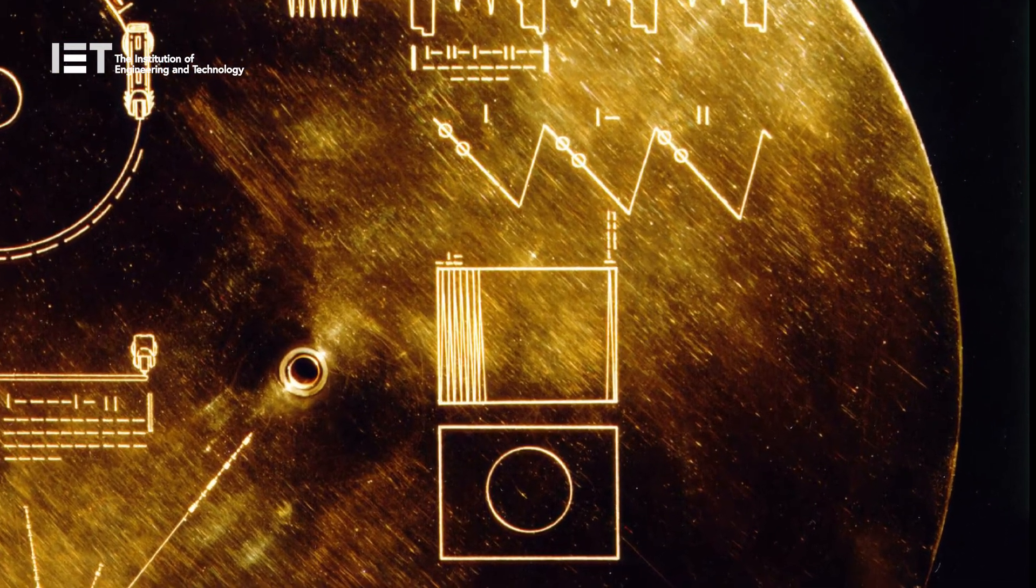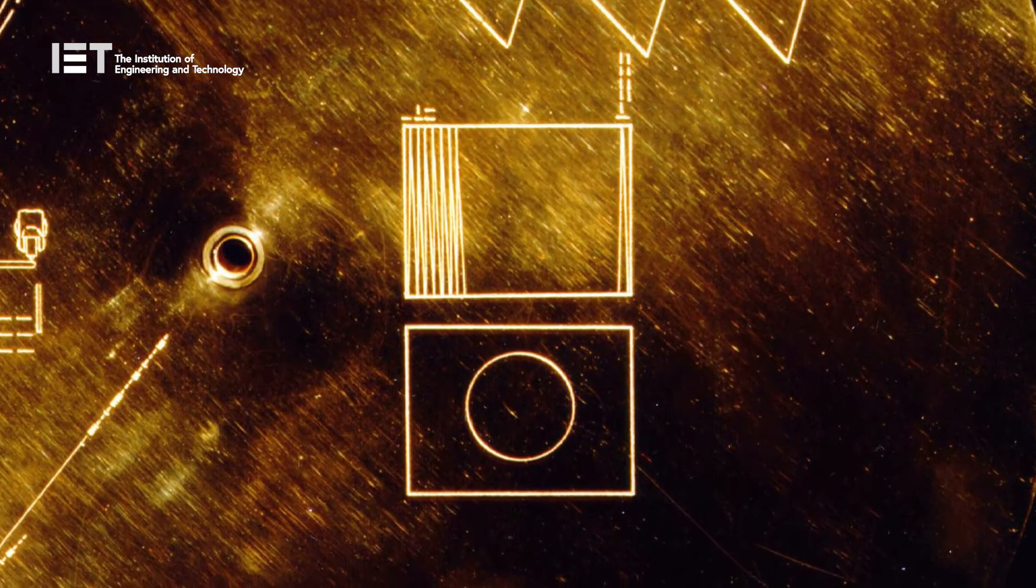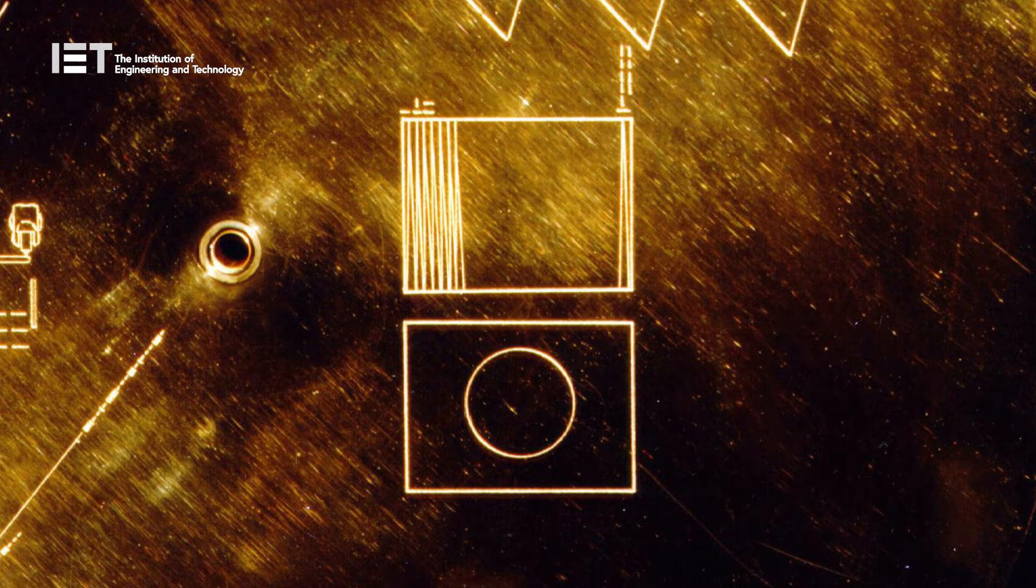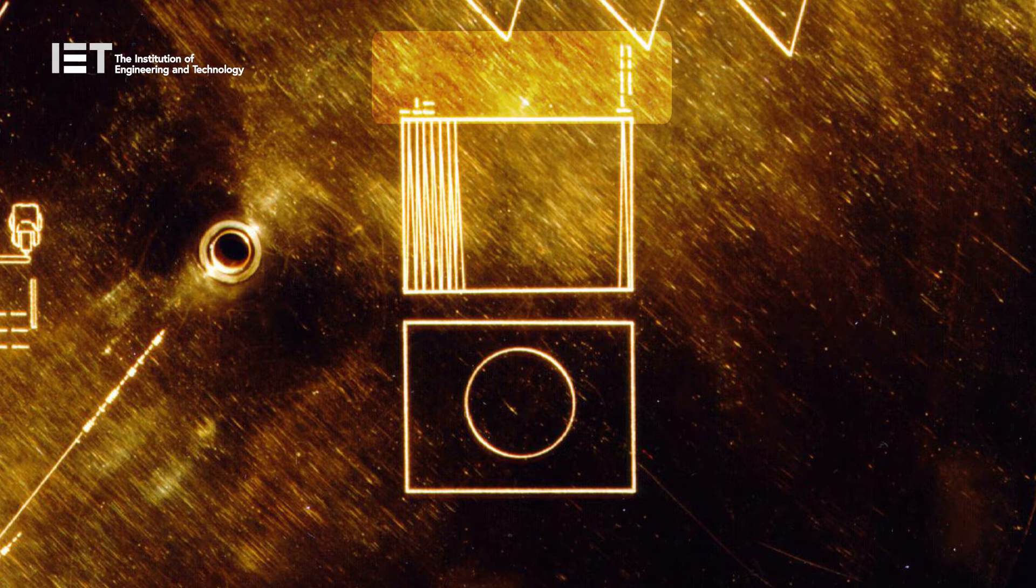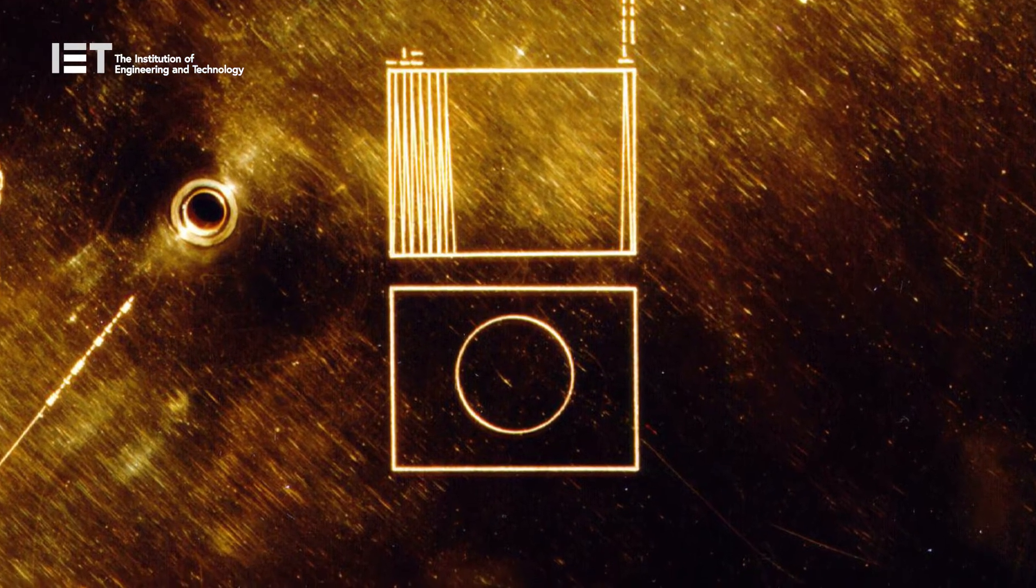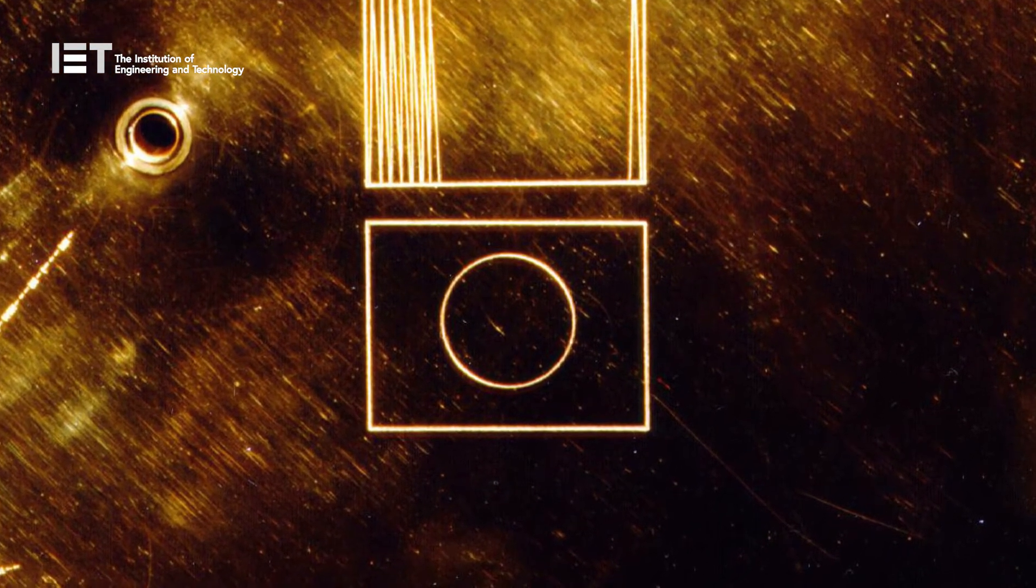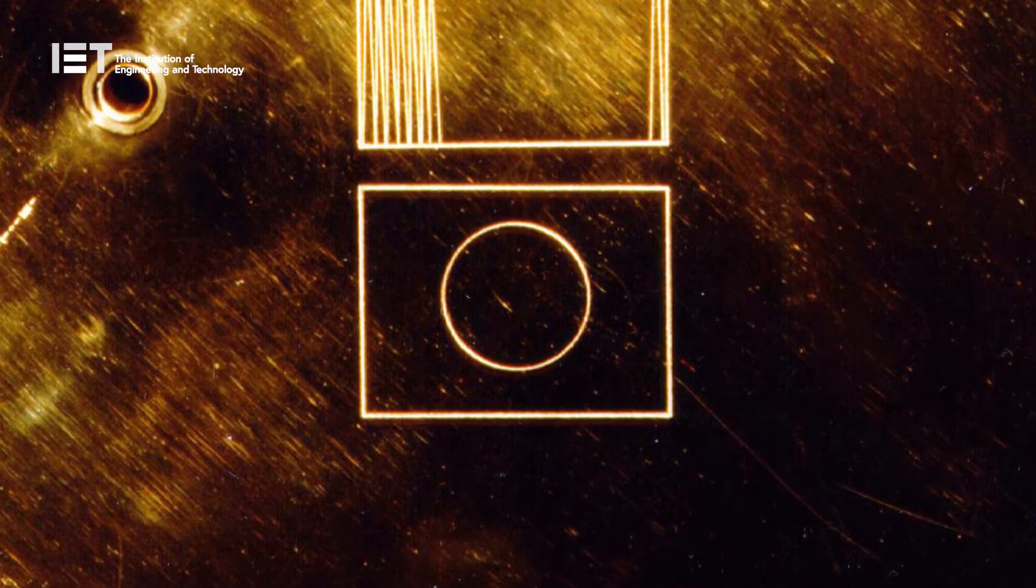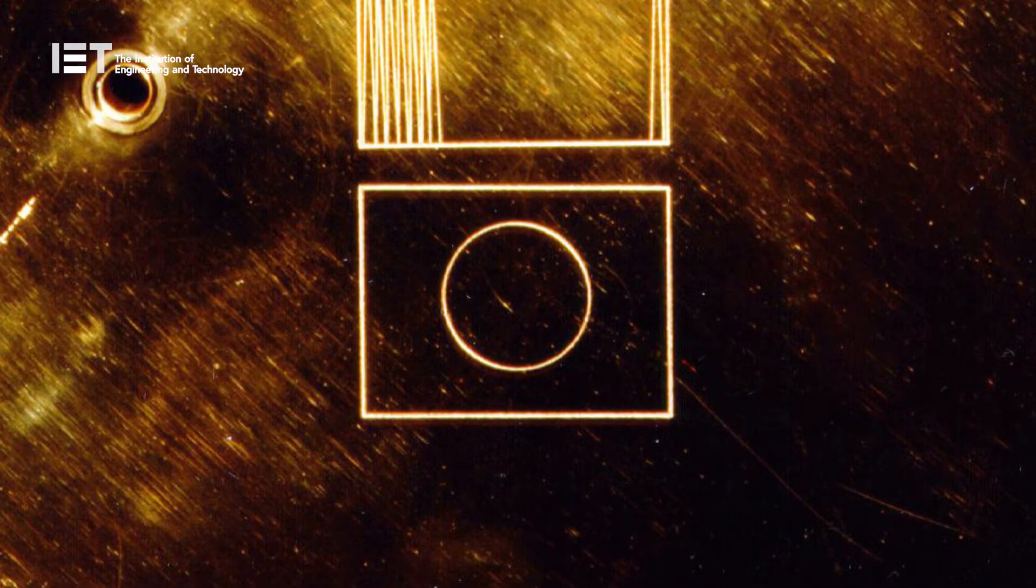This engraving shows the image frame and the direction of scan. The binary code also shows the time needed for each scan sweep. The image here is to show that if the record is properly decoded, the very first image which will appear will be a circle.